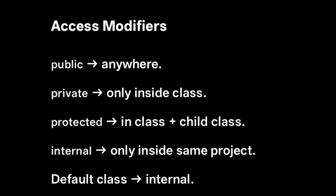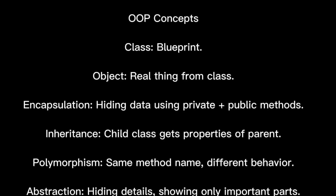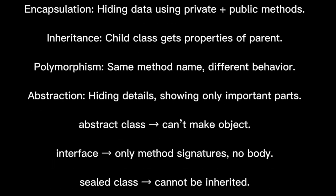For OOP concepts in C#: a class is a blueprint of an object; an object is the real thing. For example, a car blueprint is the class and the actual car is the object. Encapsulation is hiding data using private and public methods. Inheritance means inheriting properties from a parent class. Polymorphism means the same method has different behavior. Abstraction hides internal details. Abstract classes cannot be instantiated; interfaces only have method signatures. Sealed classes cannot be inherited.